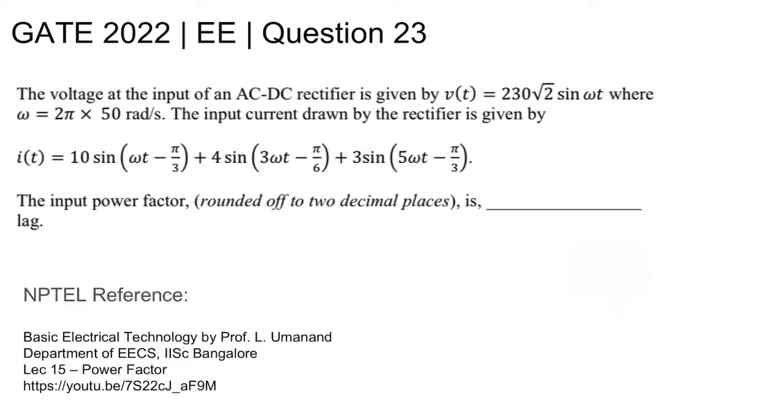This is GATE 2022 Electrical question number 23. The voltage at the input of an AC-DC rectifier is given by v(t) equal to 230√2 sin ωt, where ω is 2π into 50 radians per second. The input current drawn by the rectifier is given by i(t) equal to 10 sin(ωt - π/3)